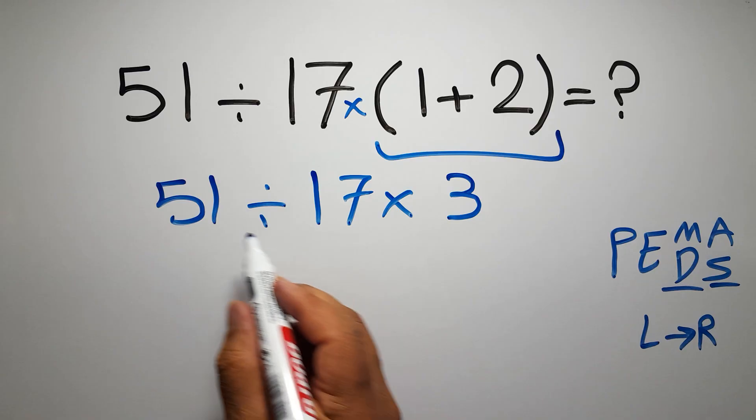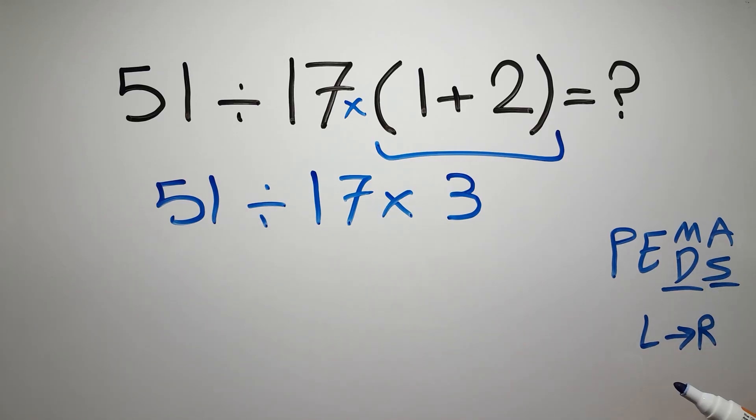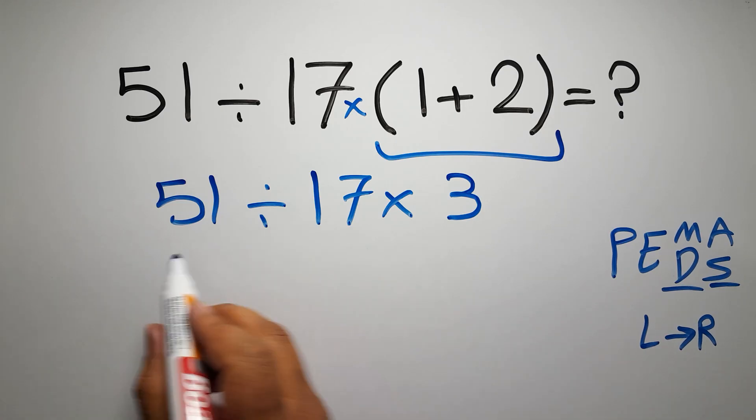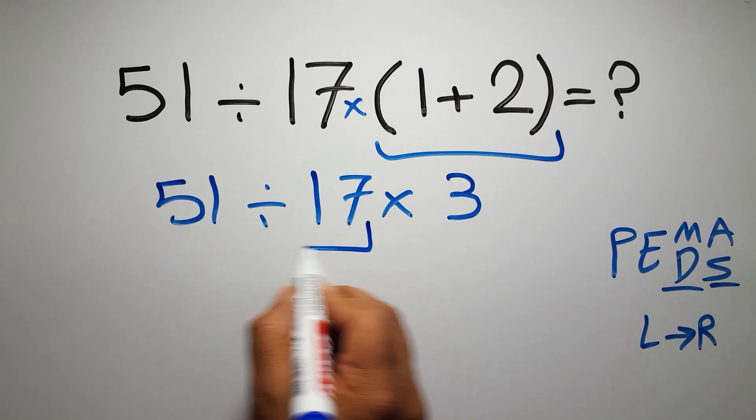Now we have one division and one multiplication. As I said, multiplication and division have equal priority and we have to work from left to right. So here first we have to do this division: 51 divided by 17 gives us 3.